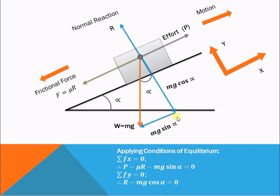Similarly, applying another condition of equilibrium, summation of Fy equals 0. Normal reaction R is along the positive y-direction, so R is positive. mg cos α is along the negative y-direction, so R minus mg cos α equals 0. In this way, we can apply the conditions of equilibrium to the resolved forces.